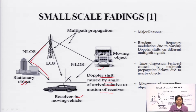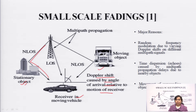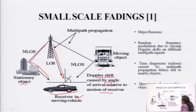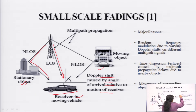Doppler shift is basically: when I am transmitting a signal and it has to be received by a receiver which is moving in nature — when the object is moving towards the transmitter, the frequency of the signal gets added; when it is moving away from the transmitter, the frequency of the signal gets subtracted. That is known as the Doppler frequency. The major reason for small scale fading is random frequency modulation due to varying Doppler shifts on different multipath signals.